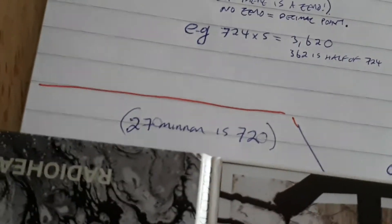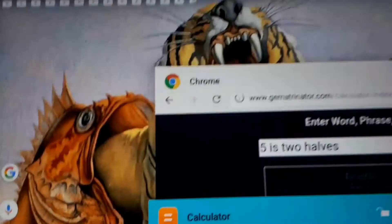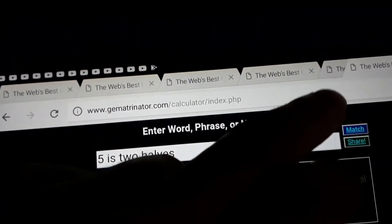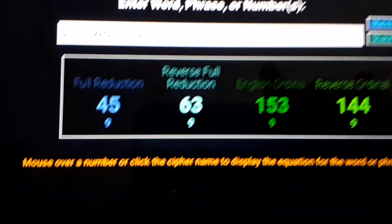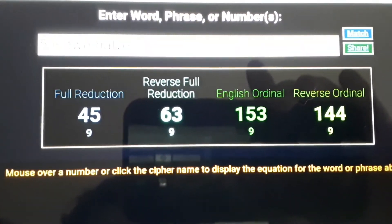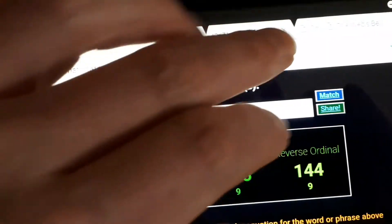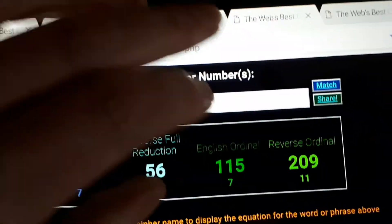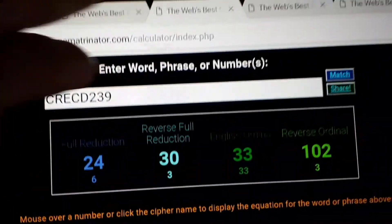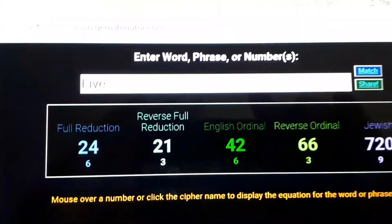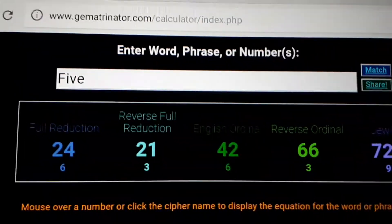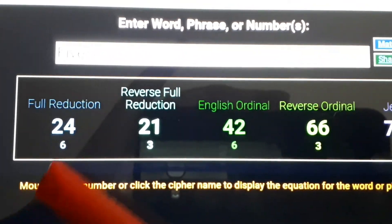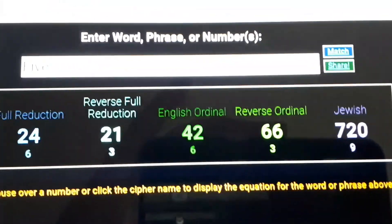Now, just going back to the gematria of it, just to end this video. Five is two halves. Five on its own, we've got 24, 21, 42, 66, 720.